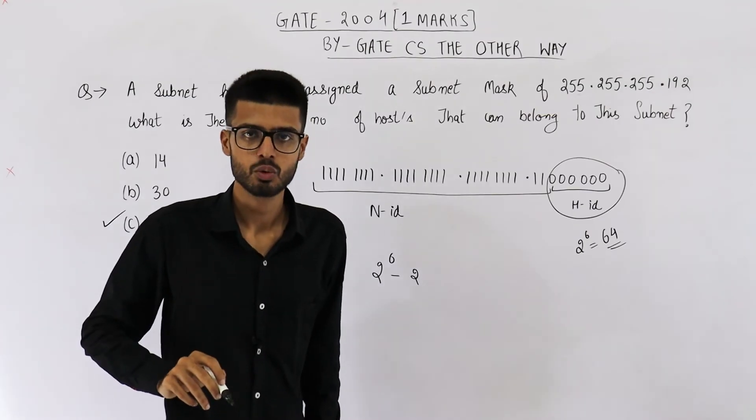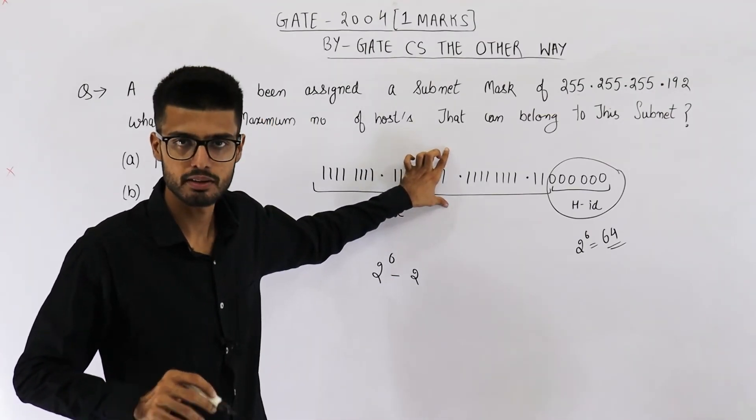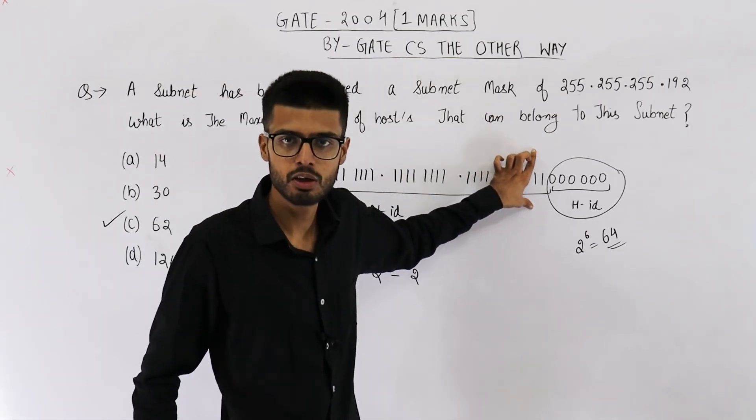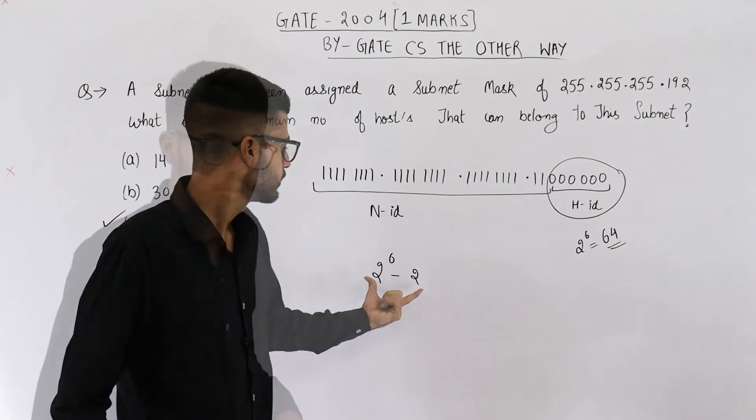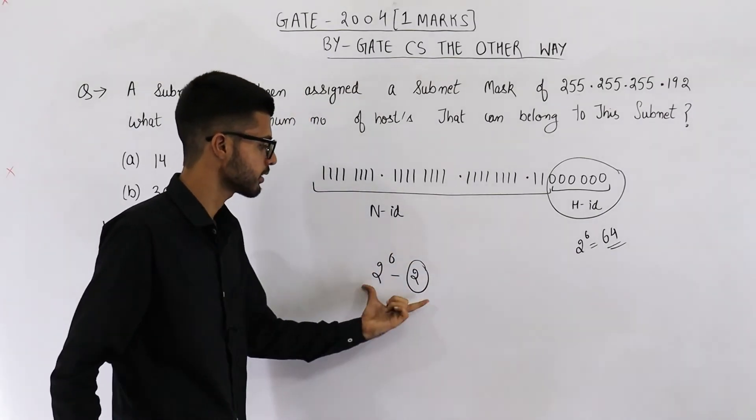The first IP address belonging to this network will be its network ID. And last IP address belonging to this network is for the broadcast address. So, that is the reason I have subtracted 2. So, answer is 62.